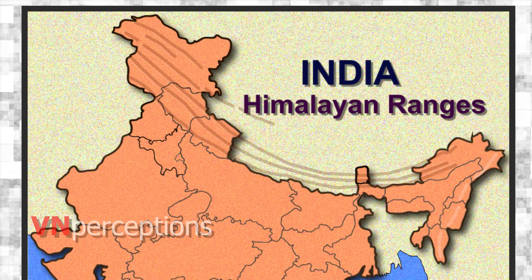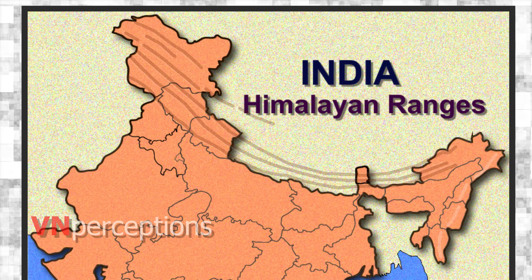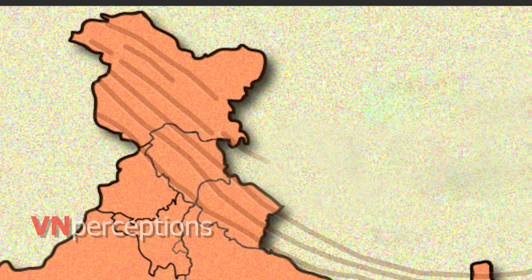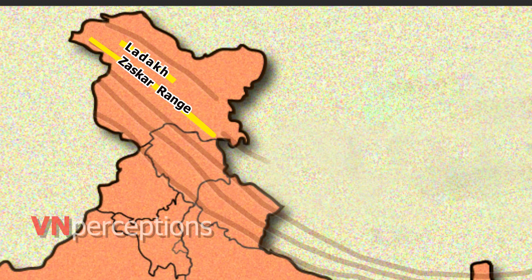The Great Himalayan range runs in a northwest to southeast direction in the western part. Behind these ranges lies the Zanskar range. The Zanskar range is a mountain range in the Indian state of Jammu and Kashmir that separates Zanskar from Ladakh. Geologically, the Zanskar range is a part of the Tethys Himalayas.